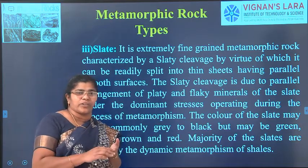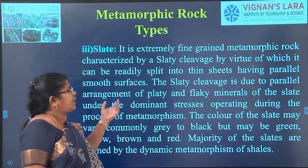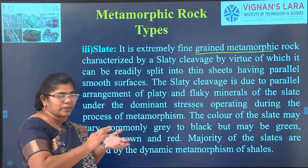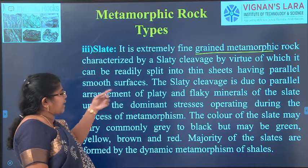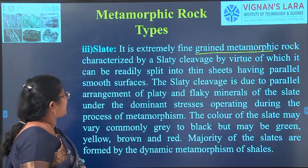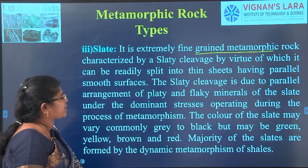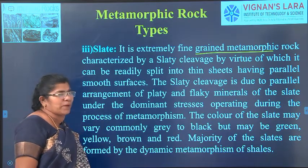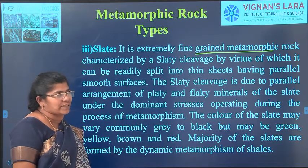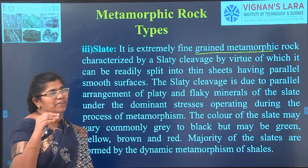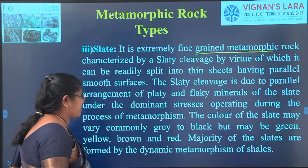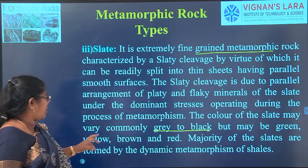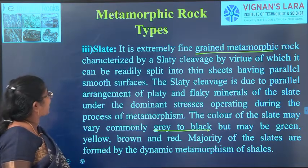Slate is a finely grained metamorphic rock, whereas marble is coarsely grained. It has a slaty cleavage — when broken it splits by layers and can be split into thin sheets. It is made up of platy and flaky minerals under the dominant stresses operating during metamorphism. The color of slate may vary from gray to black but may be green, yellow, brown, and red due to the presence of impurities. It is mainly formed by dynamic metamorphism.